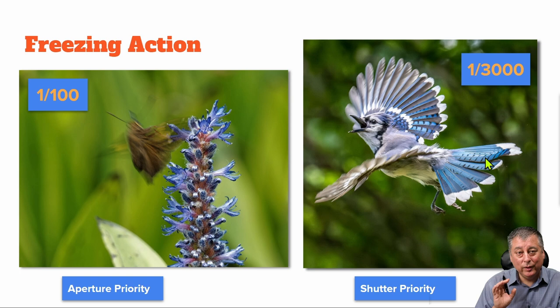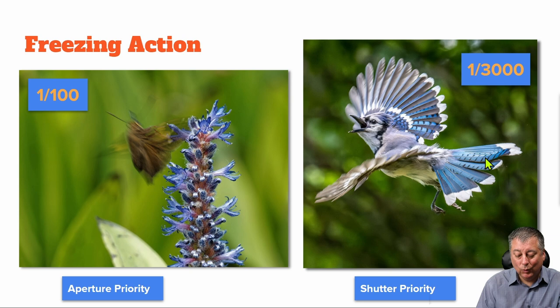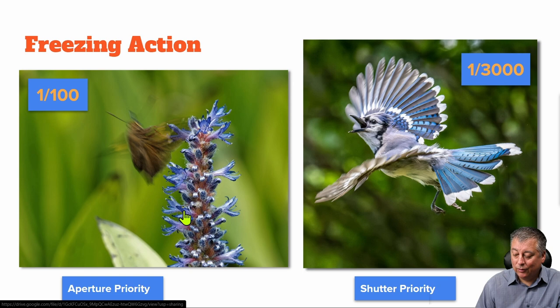Now let's look at a few more examples where my intent was to freeze the action. In the image on the left, I forgot to put the camera in shutter priority, so the camera chose the shutter speed for me. It was correct for exposure, but not for my intent — I wanted to freeze a butterfly flying off a flower. One one-hundredth of a second just didn't cut it, and as you can see the butterfly is very blurry, even though the flower is tack sharp.